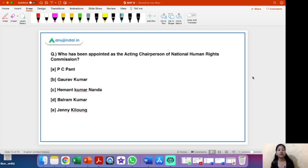So these were the informations related to this report. We are moving on to the next question. Who has been appointed as the acting chairperson of National Human Rights Commission? So you have five options: P.C. Pant, Gaurav Kumar, Himmat Kumar Nanda, Balram Kumar, Jenny Kilaun. Out of these five options which one is the right answer? The right answer is option A that is P.C. Pant. So he has been appointed as the acting chairperson of National Human Rights Commission.